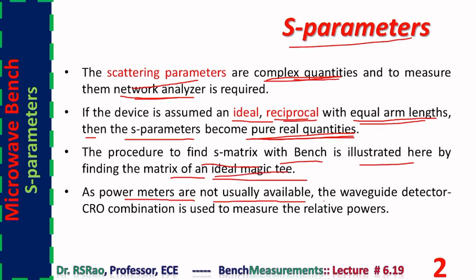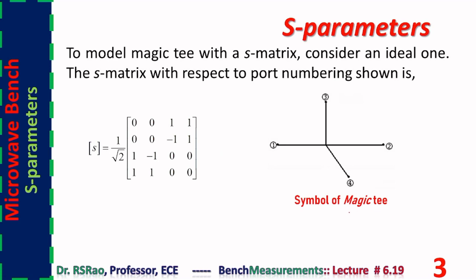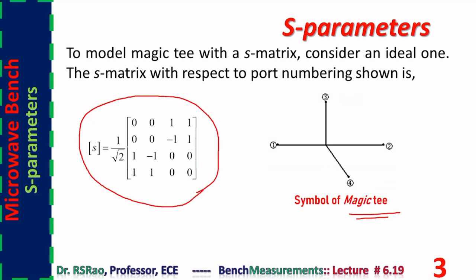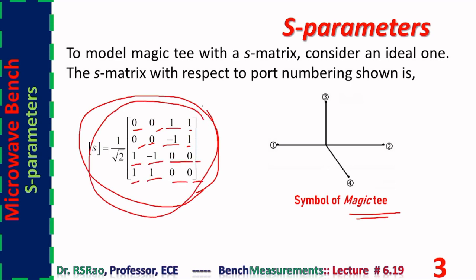For an ideal magic T, the S-matrix is given by (1/√2) times a 4×4 matrix. If a matrix is obtained by measurement, then comparing it with this analytical matrix gives some idea regarding the correctness of the measurement process.